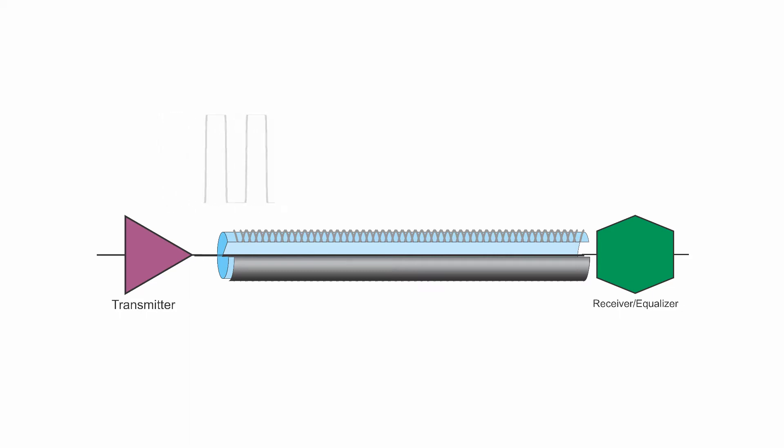The use of an equalizer that learns the cable's distortion and corrects for it allows very high-speed digital signals to be sent long distances over coax cable.